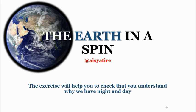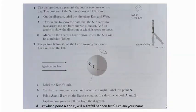Number one: The picture shows a person's shadow at a time of day. The position of the sun is shown at 11 AM, so the sun is at 11 AM.